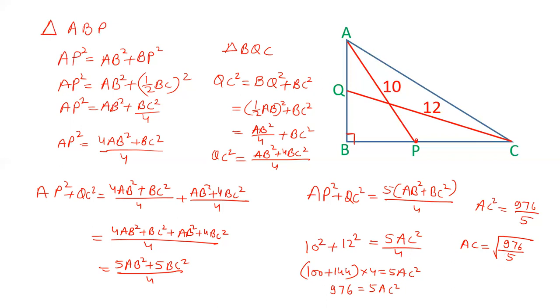In general, we can always remember this formula that AP square plus QC square is always equals to 5 by 4 AC square in such a situation where a right angle triangle is given and we have a midpoint of perpendicular sides.